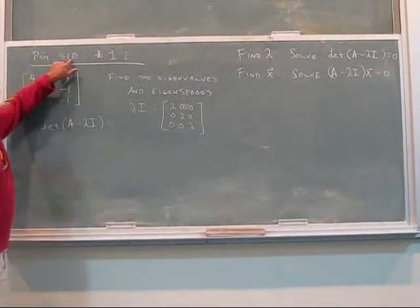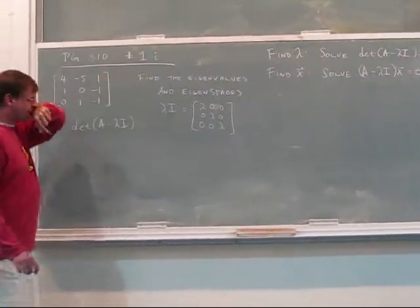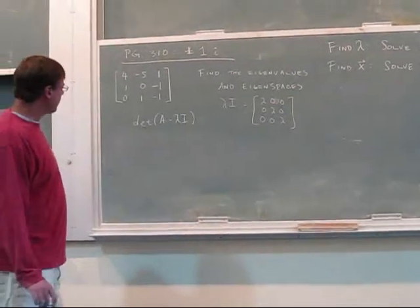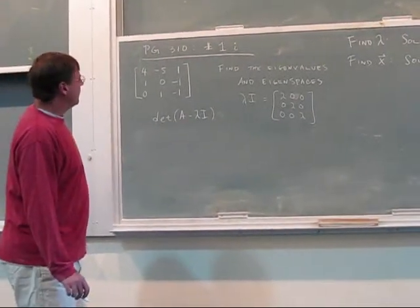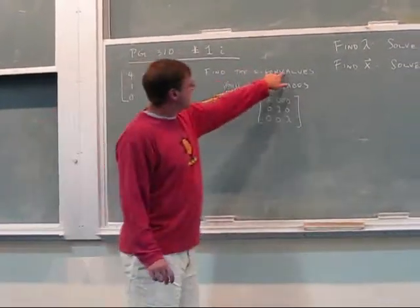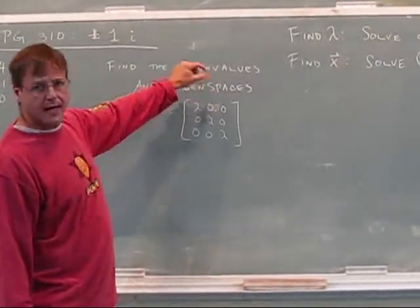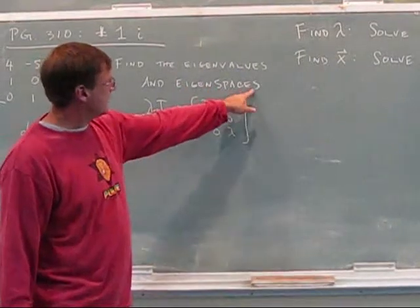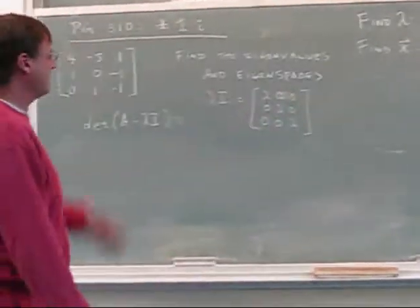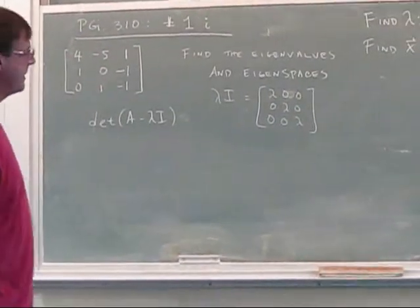Okay, this is page 310, number 1i. I'll give you a hand with this one. We're going to find eigenvalues and then the eigenvectors. The eigenvectors for the eigenvalues make up the eigenspaces. So I'll elaborate on those terms at the end.